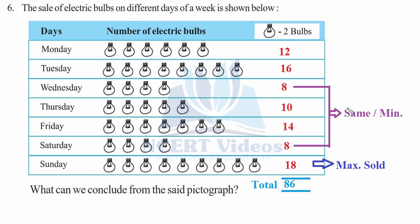Conclusion 1: On Saturday and Wednesday there is the minimum sales of 8 bulbs — calculated as 4 pictures × 2 = 8. On Monday, 6 pictures × 2 = 12 bulbs. Tuesday: 12 + 4 = 16 bulbs. Wednesday: 8 bulbs. Thursday: 8 + 2 = 10 bulbs. Friday: 10 + 4 = 14 bulbs. Sunday: 16 + 2 = 18 bulbs.